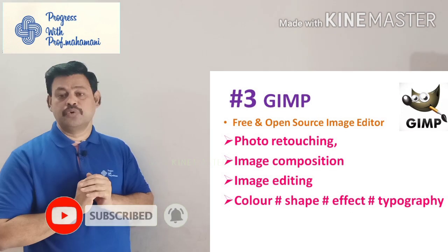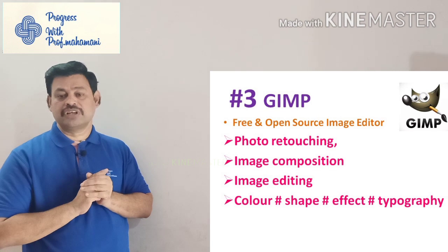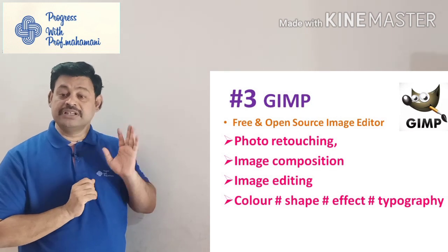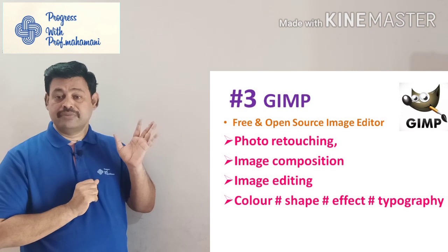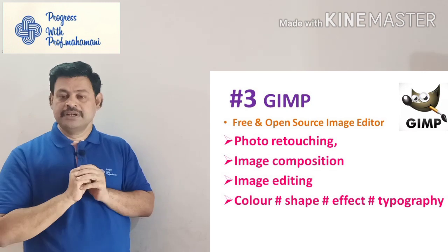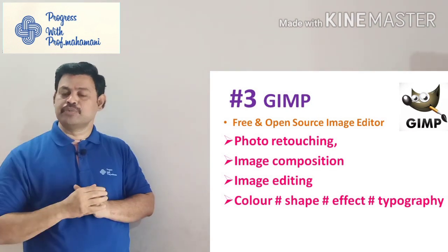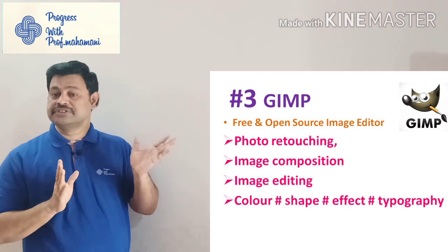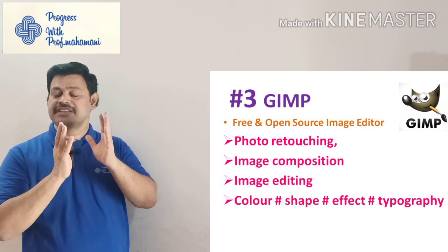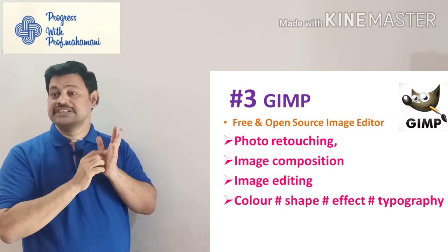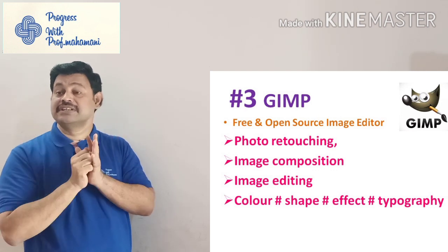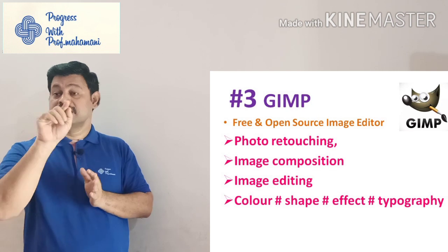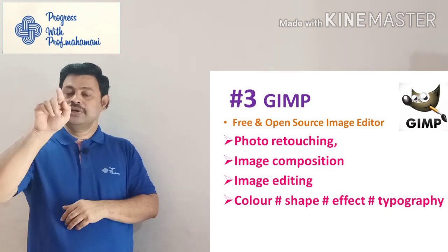The third one is GIMP — a free and open source image editor used for photo retouching, image composition, and more. It has many colors, shapes, and effects, and supports typography. For research scholars, it is useful when you take a photograph of an experimental setup but the background is poor — you can remove the background. It is also useful for composing SEM images and XRD images together, and for marking different components in a picture.